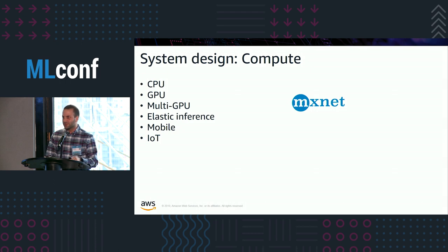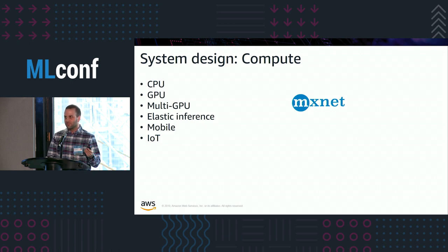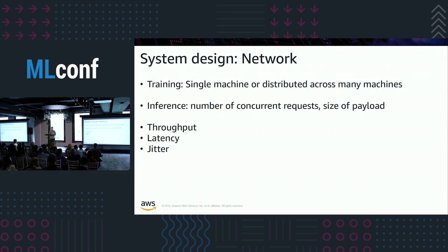Moving into the compute side, you think about CPU devices, GPU devices, multi-GPU devices with multiple GPUs on a single machine, Elastic Inference where you can attach an accelerator — essentially a fractional GPU — and of course mobile and IoT devices. For most of our built-in algorithms, we rely heavily on Apache MXNet to handle this breadth of device support. When thinking about a single machine, you're thinking about parallelizing across the cores of that device.